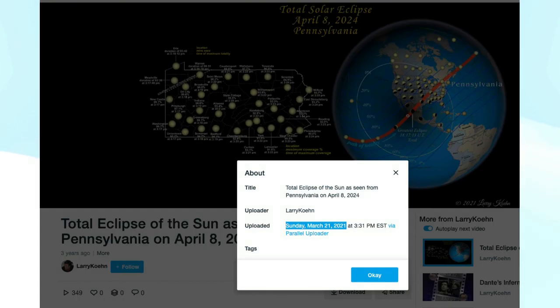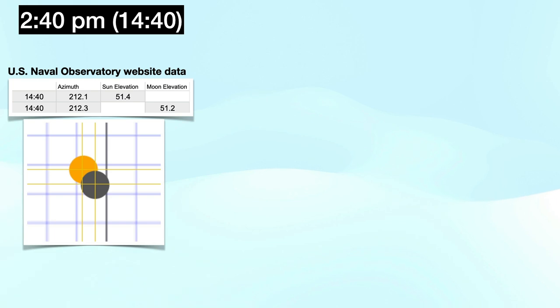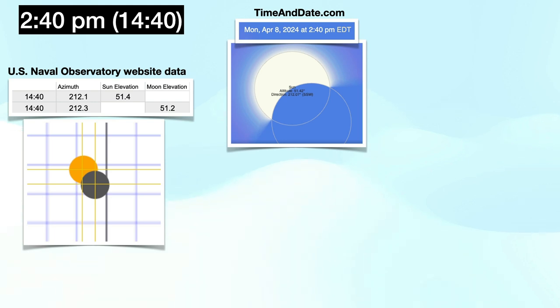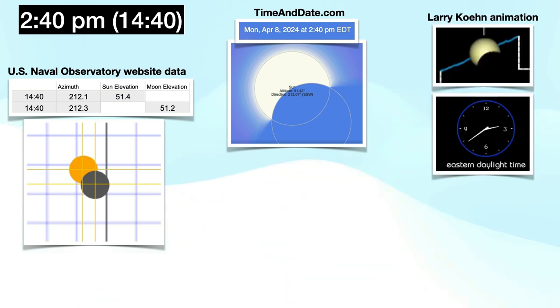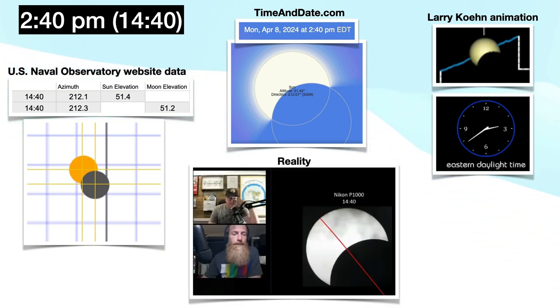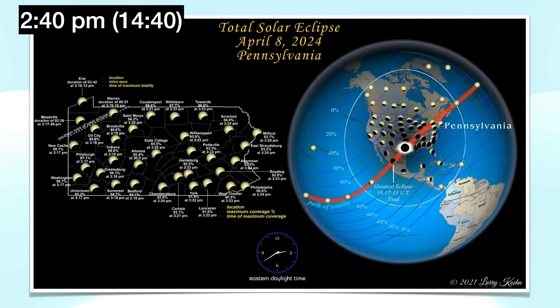This prediction animation was made fully three years before the event. To recap, let's take one moment in time: 2:40 p.m. Eastern Time from Erie, Pennsylvania, otherwise known as 14:40 military time. Here we have a graphic based on U.S. Naval Observatory data, a visualization by timeanddate.com, and a prediction animation by Larry Cohn. They're all in agreement, all based on the heliocentric globe model, and they all match the reality photographed by Jeremy McGarry. Please let that sink in. When predictions match reality — such as the moment in time on the globe animated three years ahead of time — it's a good indication that the prediction is based on an accurate model.